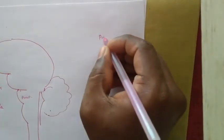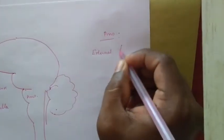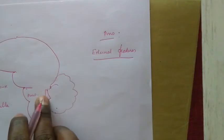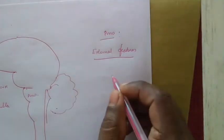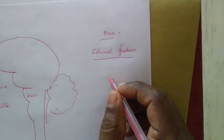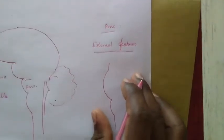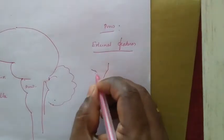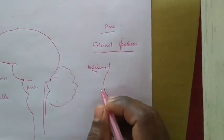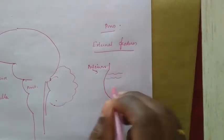So, pons. First we will study the external features. As you see, pons is bulged anteriorly and flat posteriorly. The pons has got a convex anterior surface, and it has got a lot of transversely running fibers.